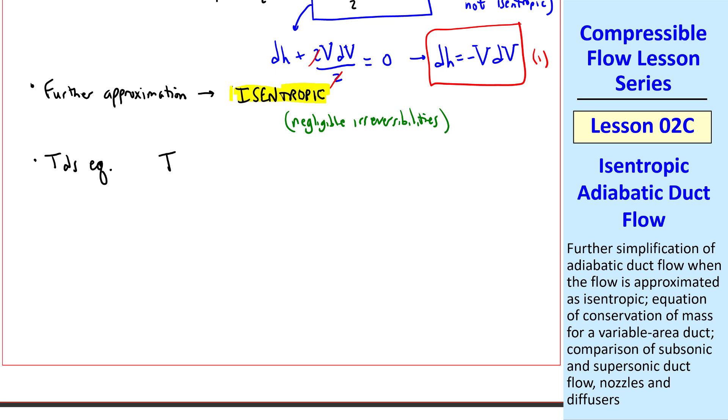Recall one of our T dS equations was T dS equal dH minus V dP, or in terms of density rather than specific volume, dH minus 1 over rho dP, but dS equals 0 when the flow is isentropic. So this gives us dH equal dP over rho, and I'll call that equation 2.